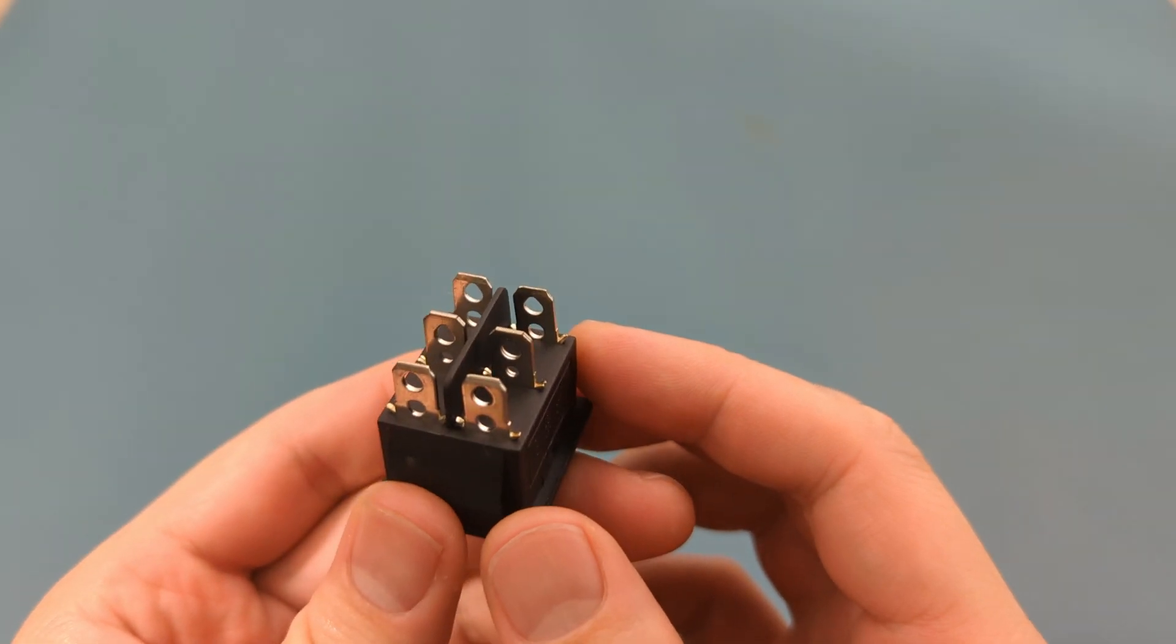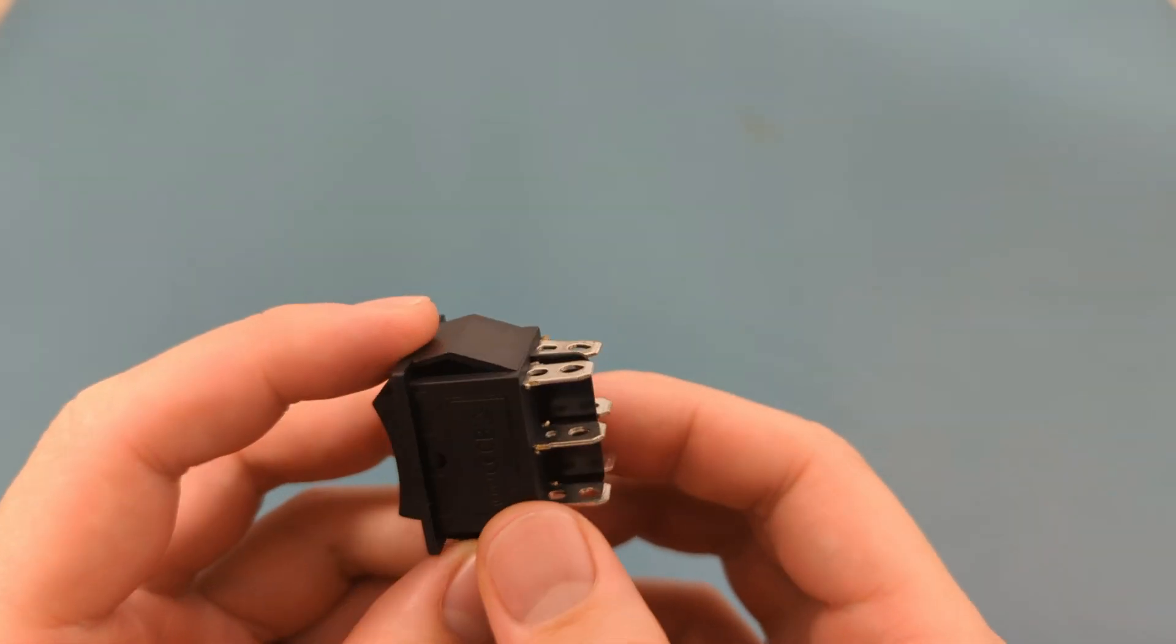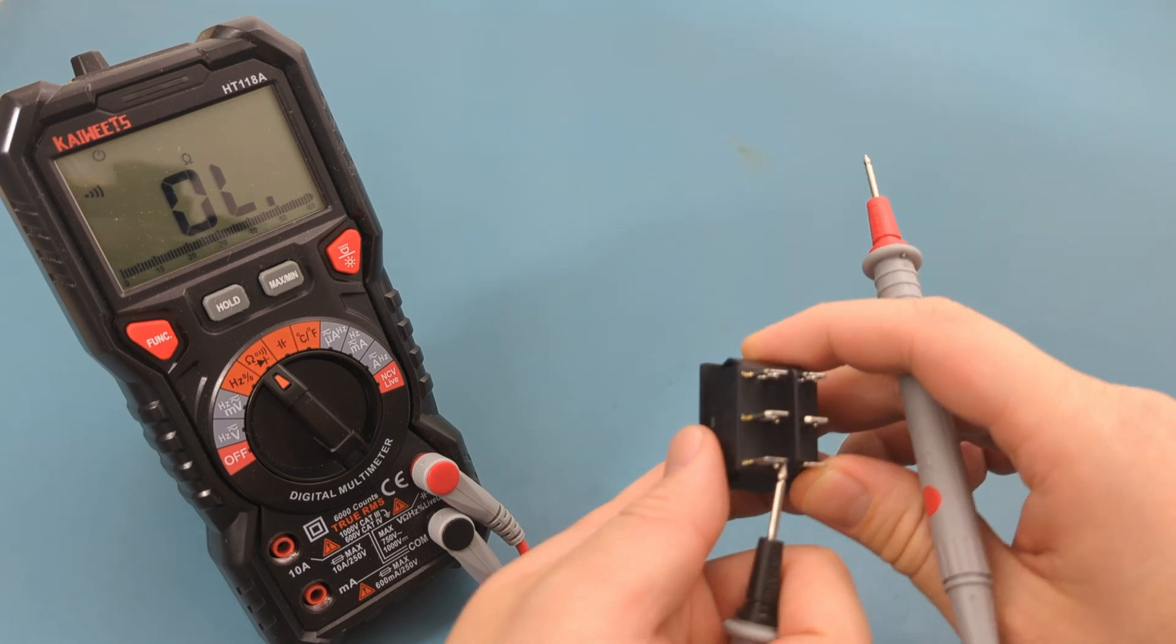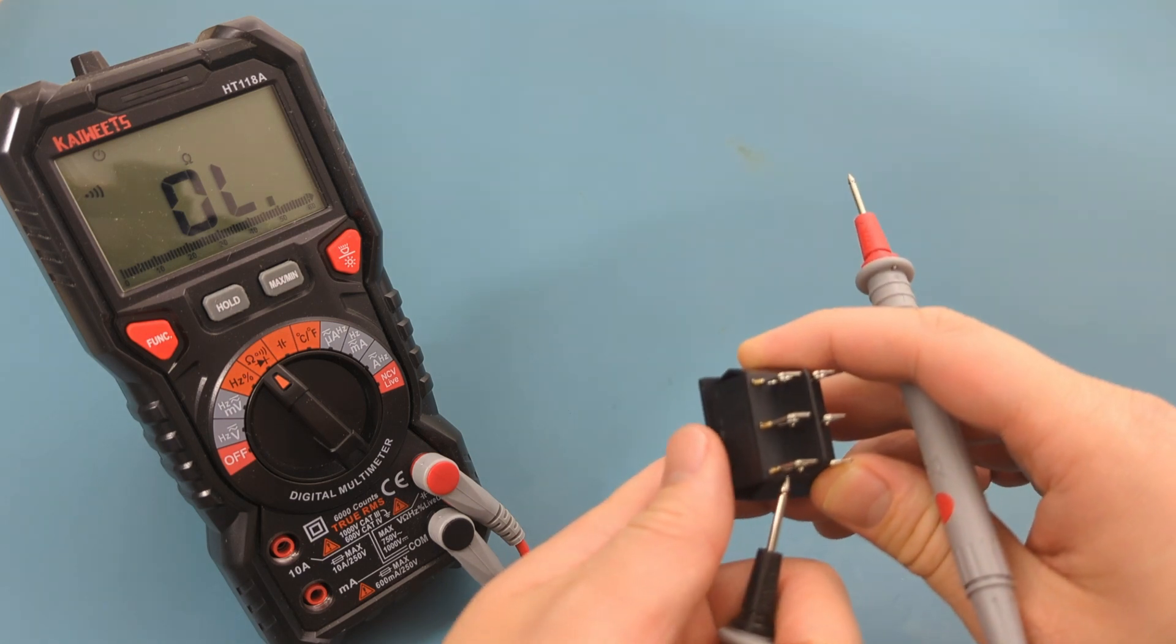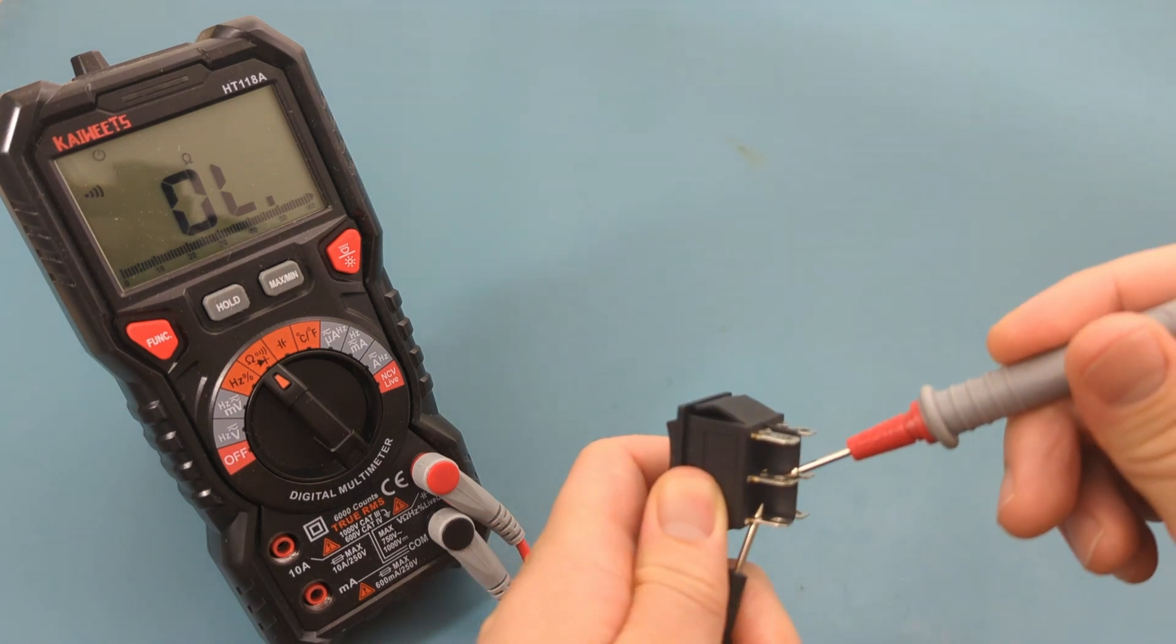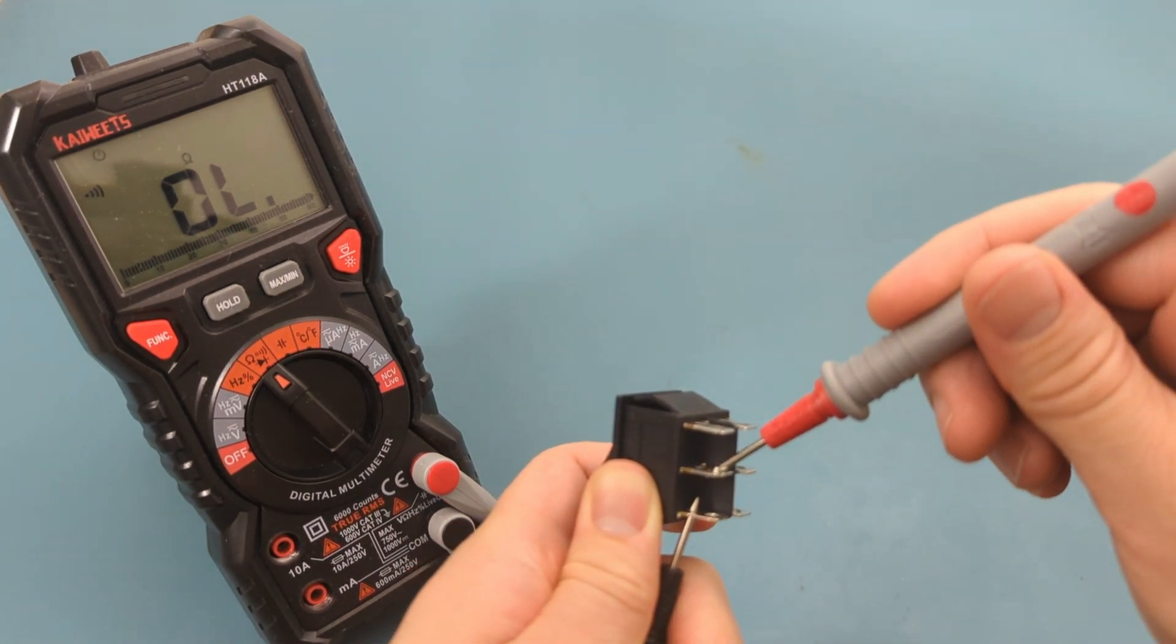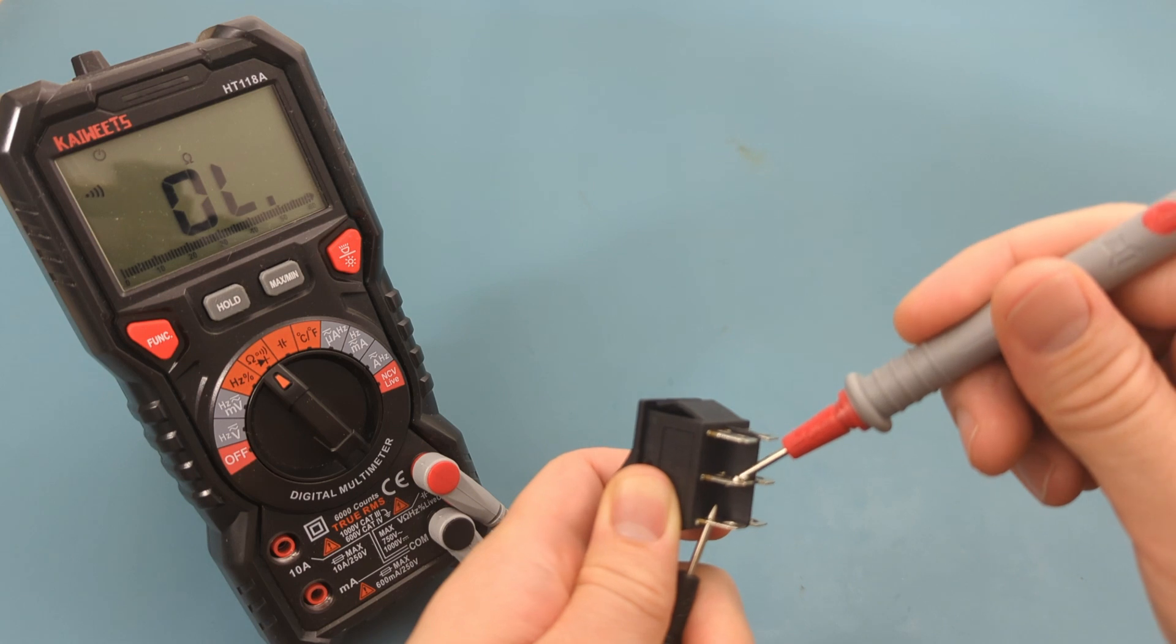We will test two pins for the positive terminals, and two pins for the negative terminals. Touch the black probe on the bottom pin. Touch the red probe on the middle pin. There is no beep since the switch is in the off position. Press the switch to the first on position. There is a beep, so there is continuity.